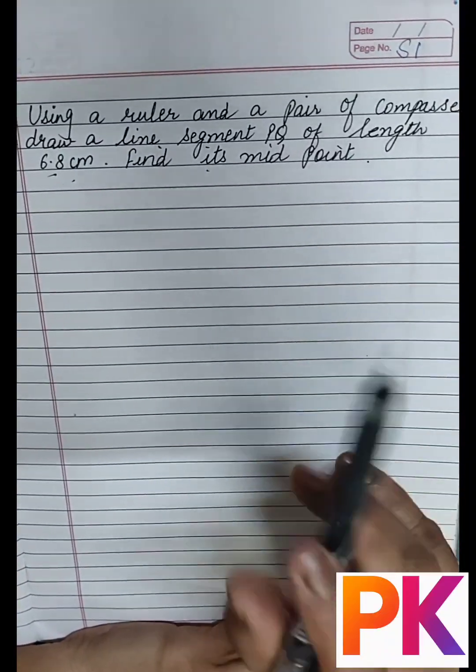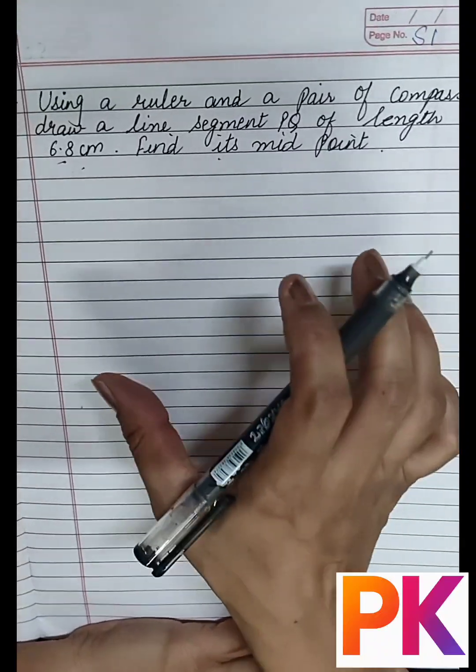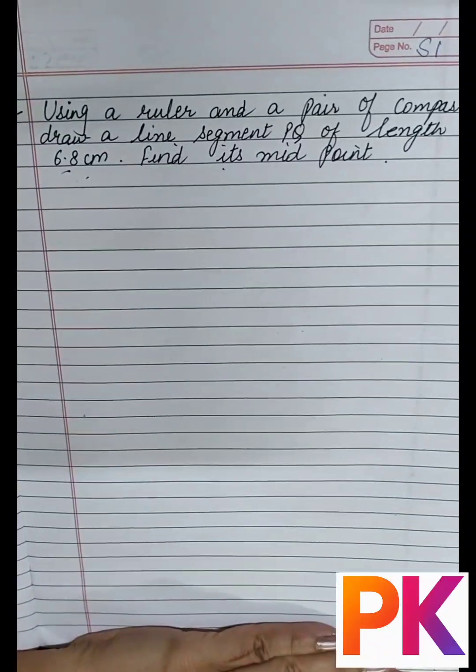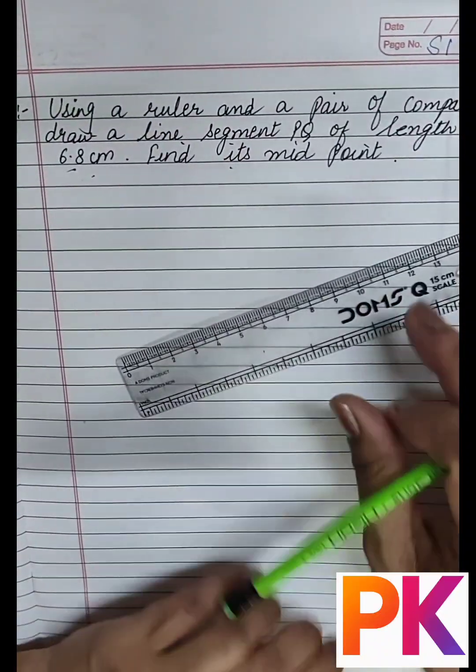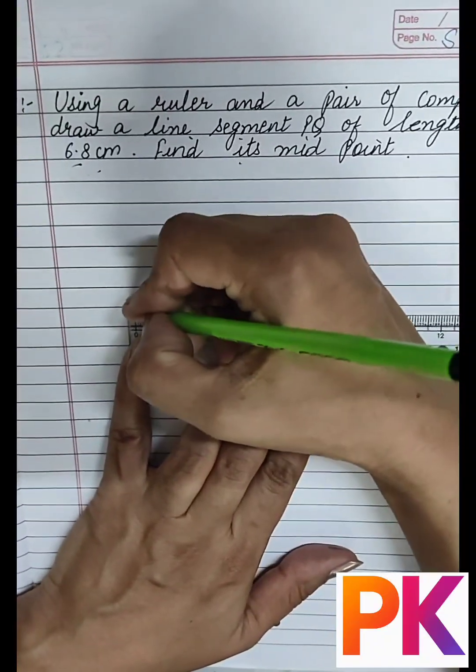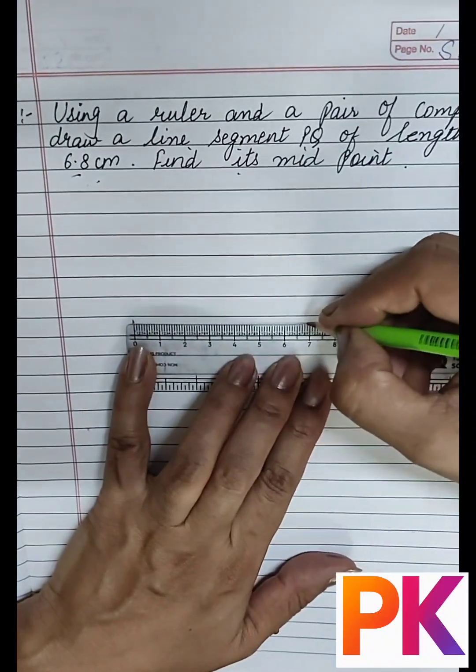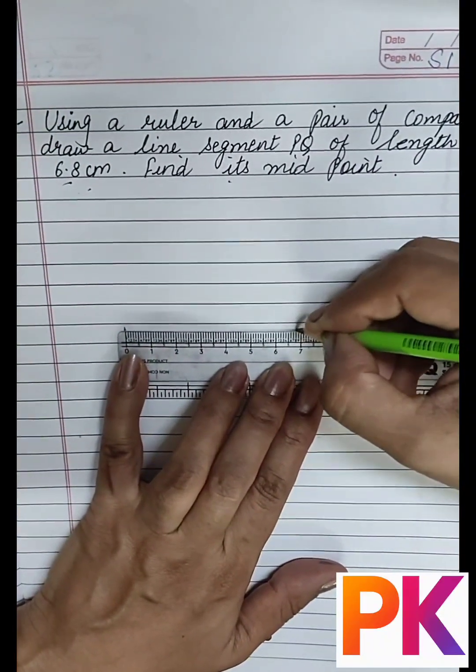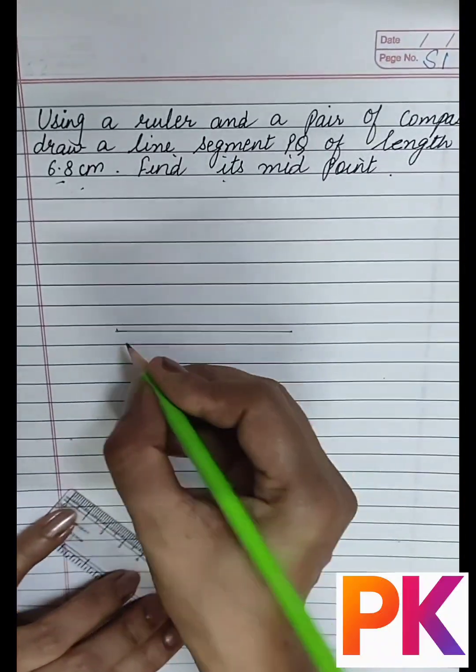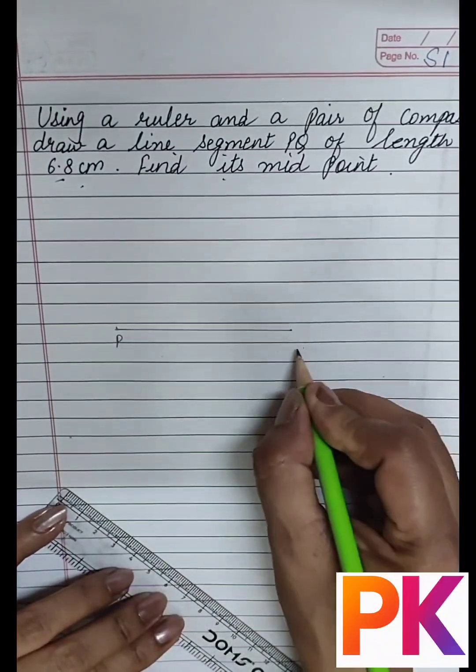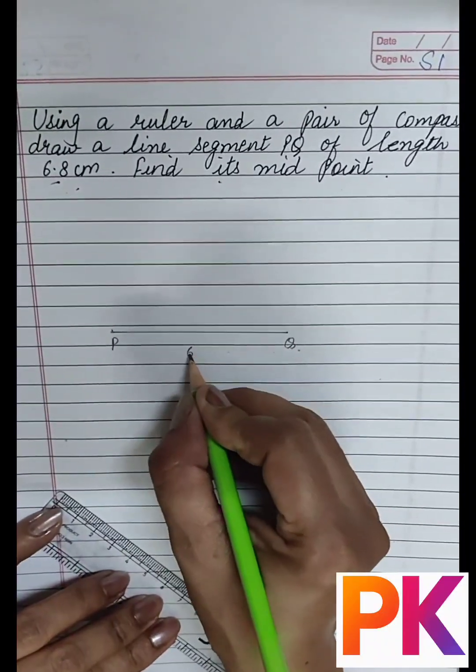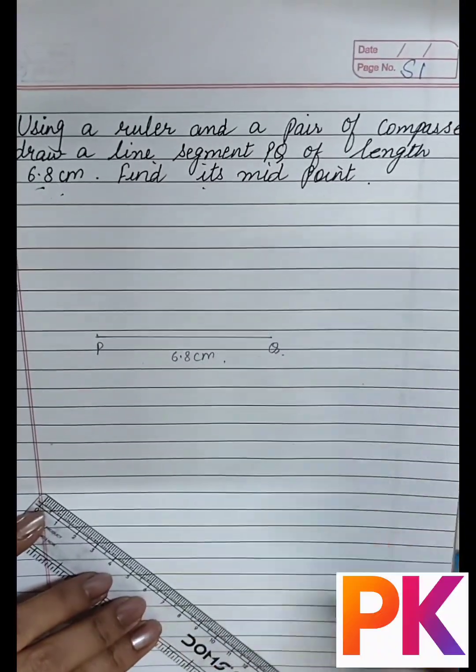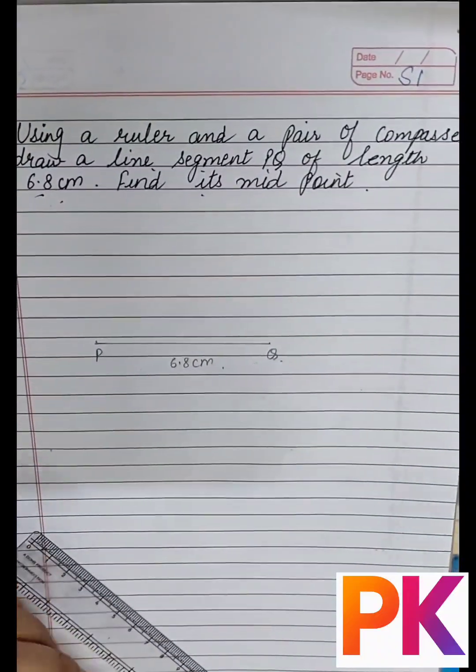To find the midpoint of the line segment, first of all draw a line segment of length 6.8 cm. Name it as PQ. This is the length 6.8 cm. Now we have to find the midpoint of this line segment.